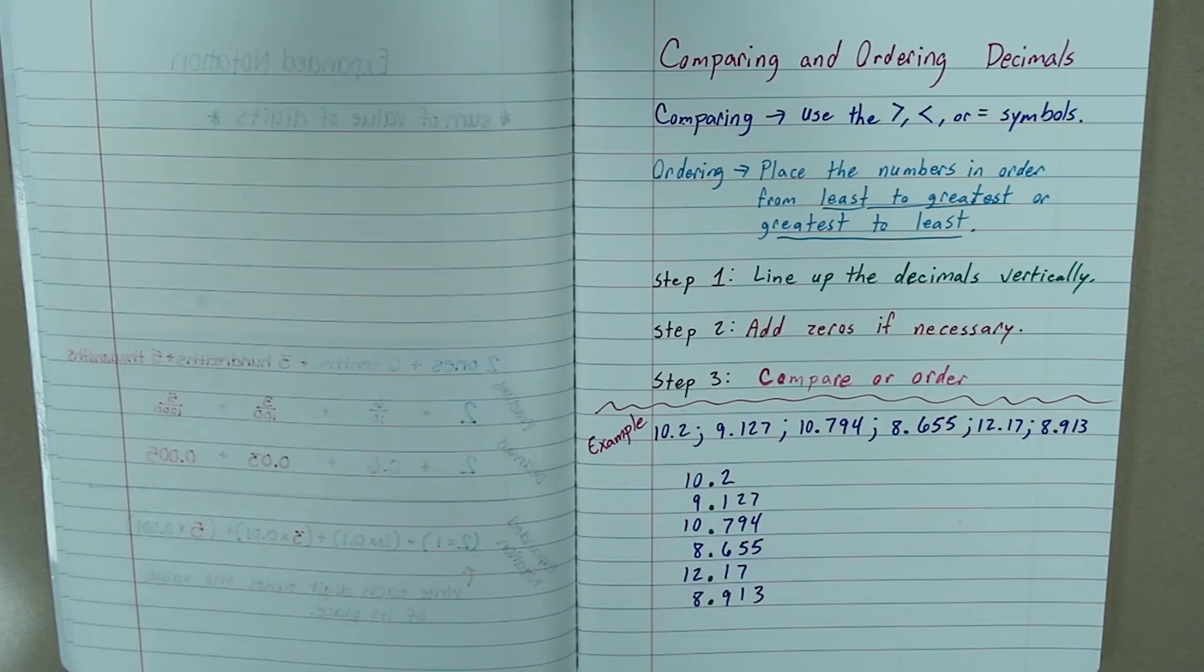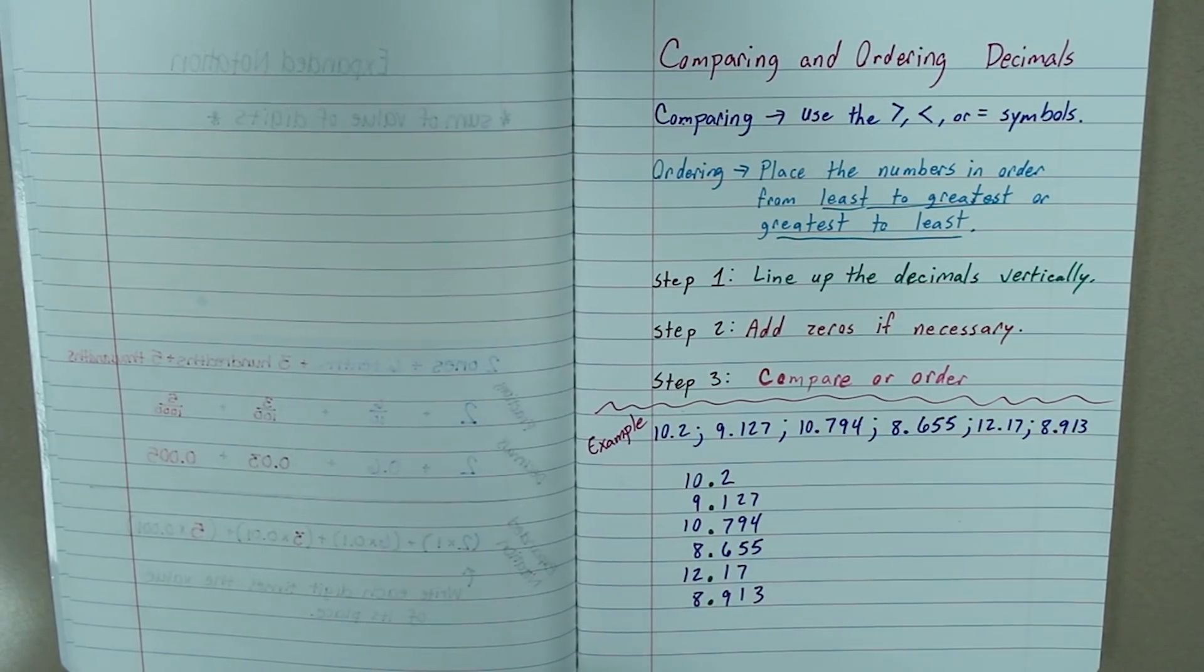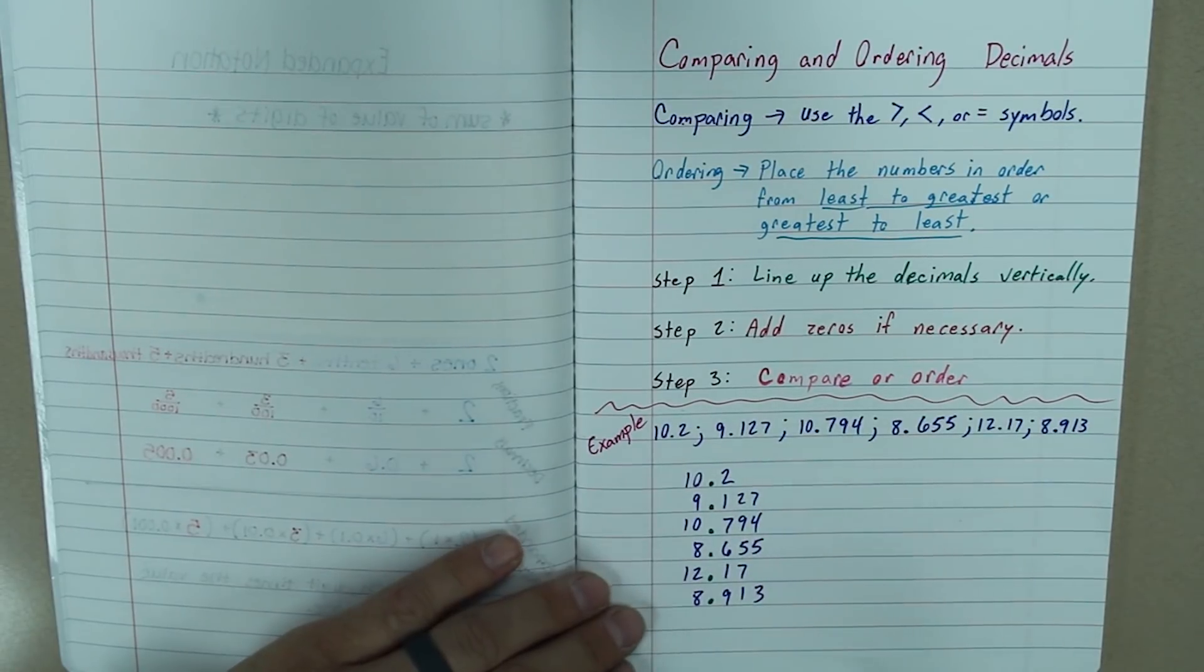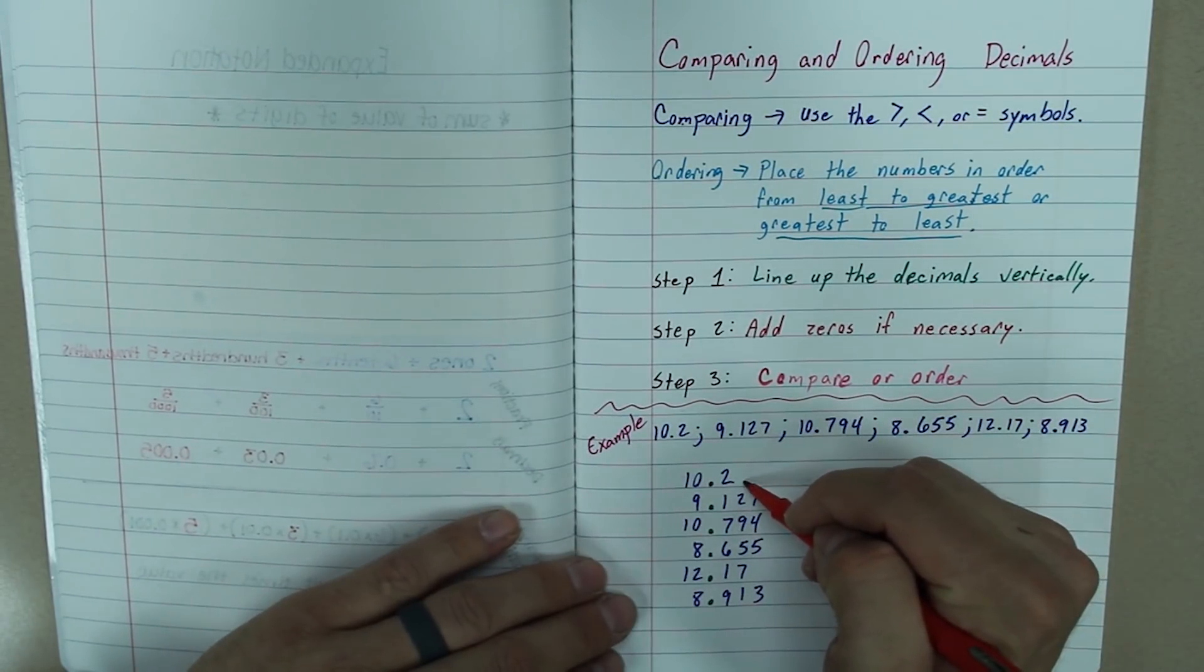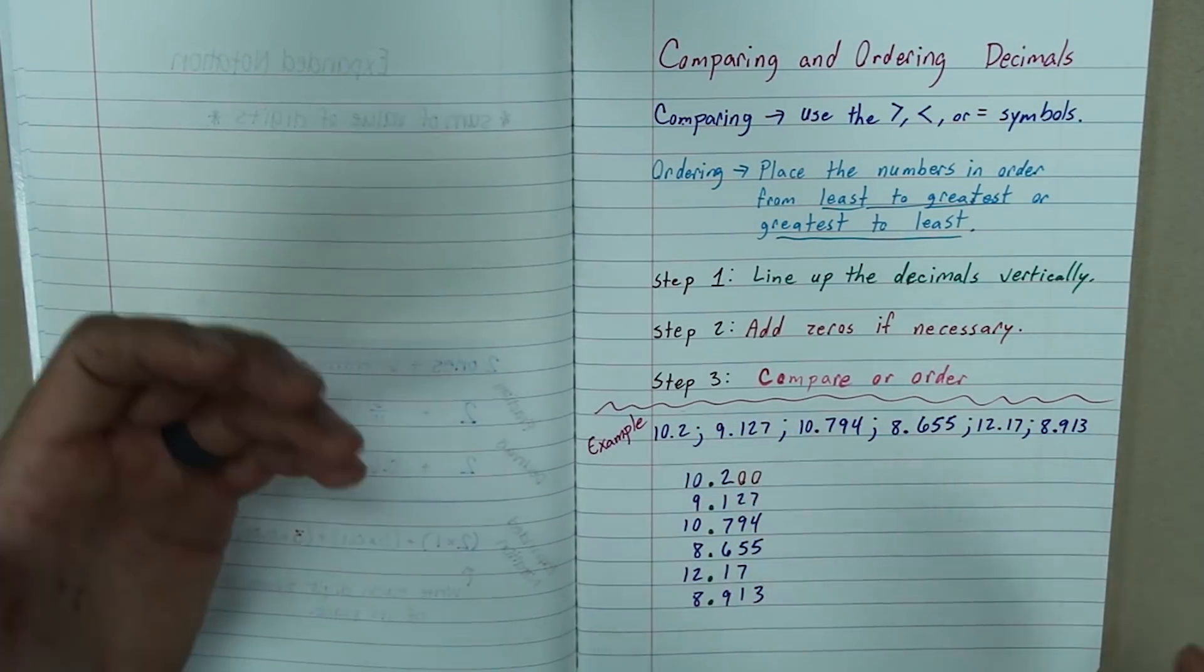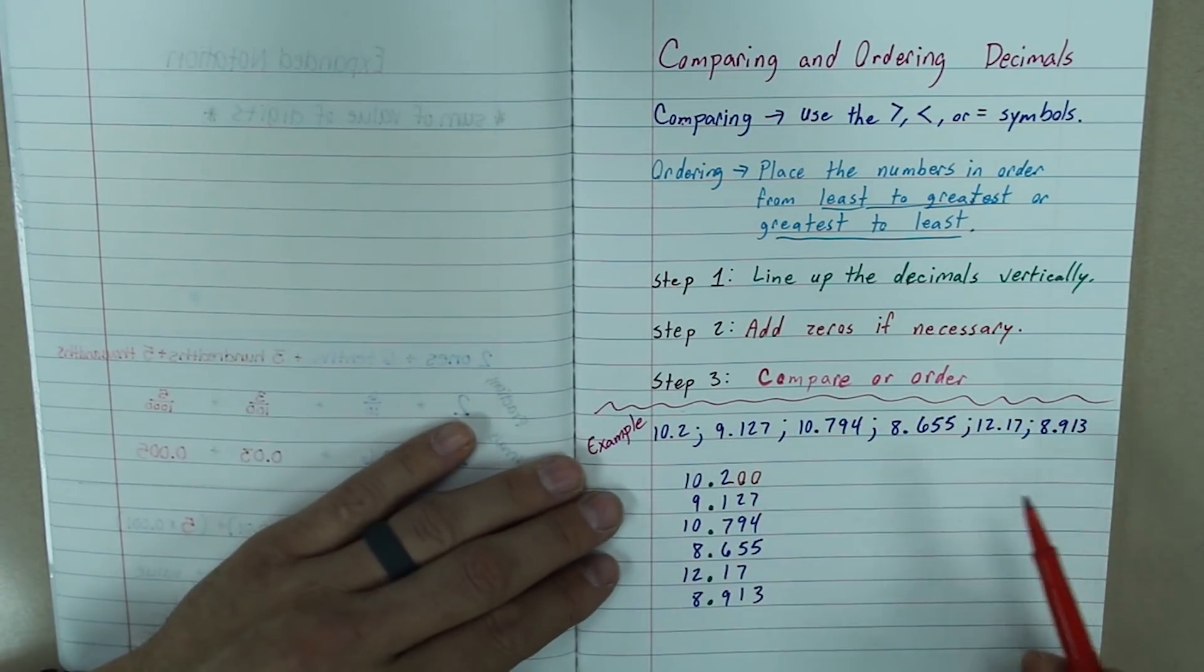Now, step 2 was to add zeros if necessary. I want to make sure all my decimal places have the same amount of zeros. So, I am going to put an imaginary zero here. Now, are these really zeros? No, they are imaginary zeros.